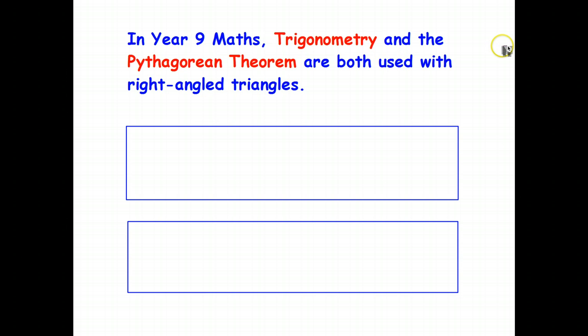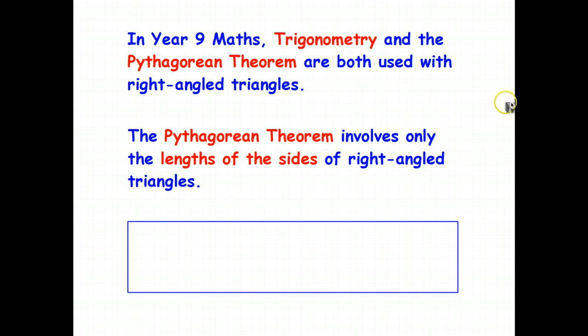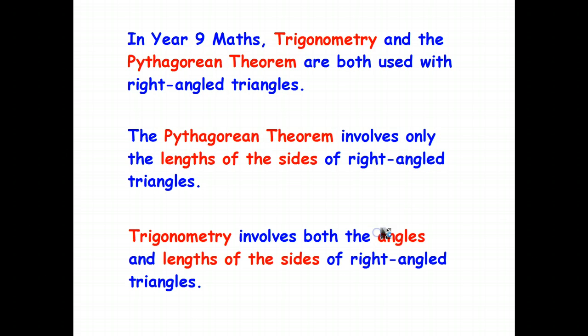Okay, so in summary, in year nine maths, we use trigonometry and the Pythagorean theorem. And it turns out in year nine maths, we use right-angled triangles for both of those. So we can only use right-angled triangles, not any triangle. Pythagorean theorem is useful if you know two sides of the right-angled triangle and you're trying to find the third side. Trigonometry is when you also are interested in or you know one or more angles. So trigonometry involves both the angles of a right-angled triangle as well as the lengths.